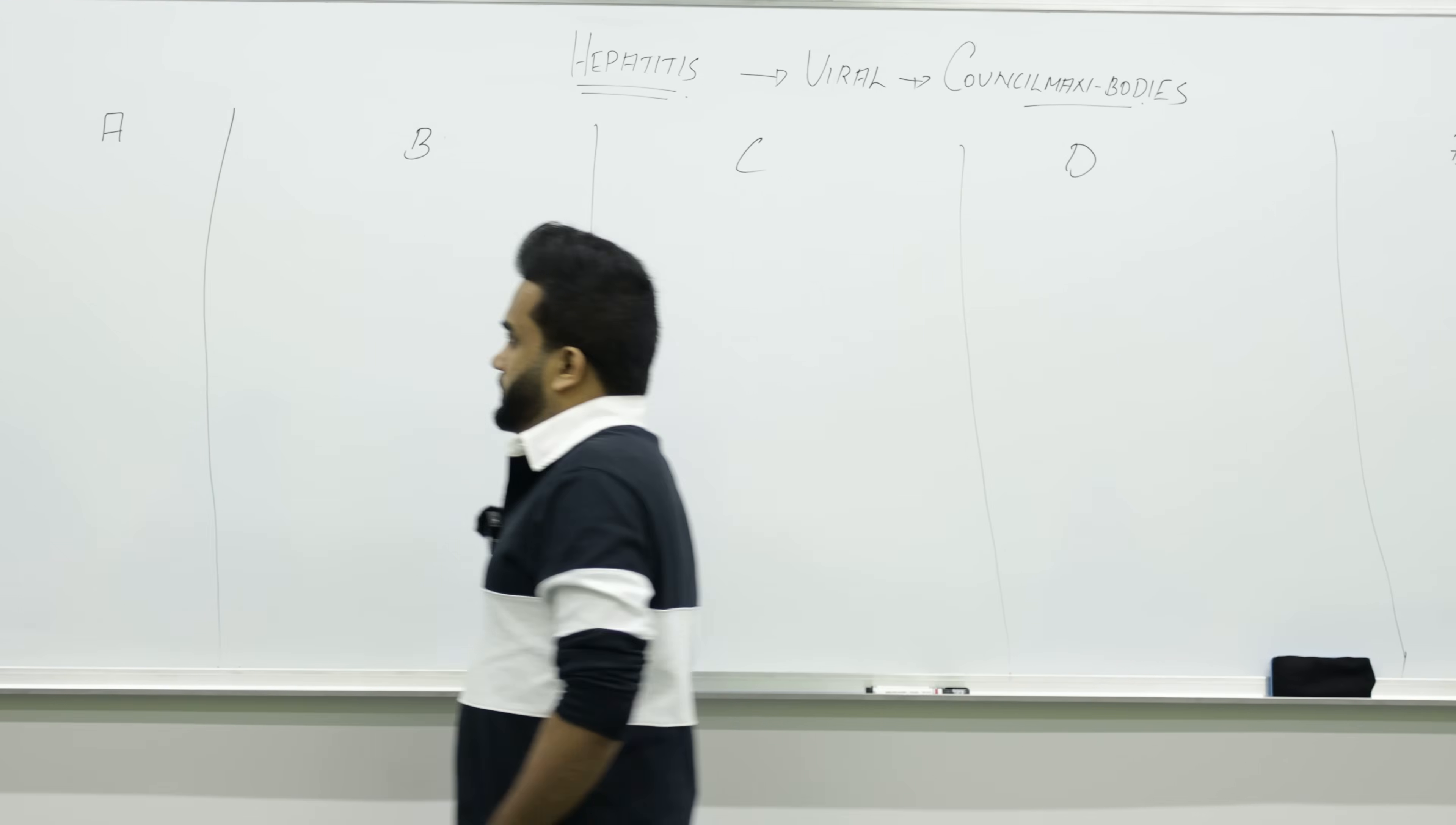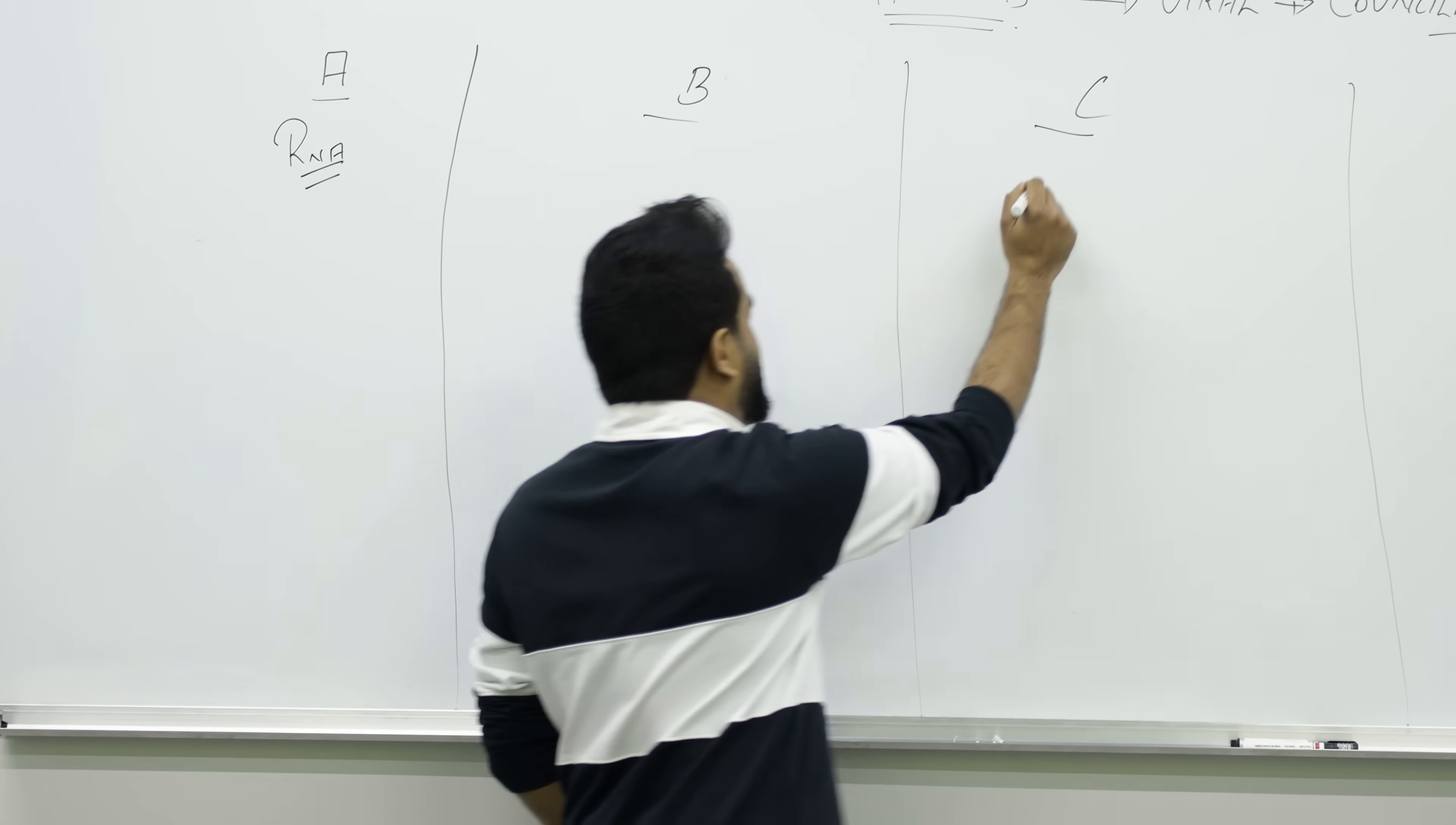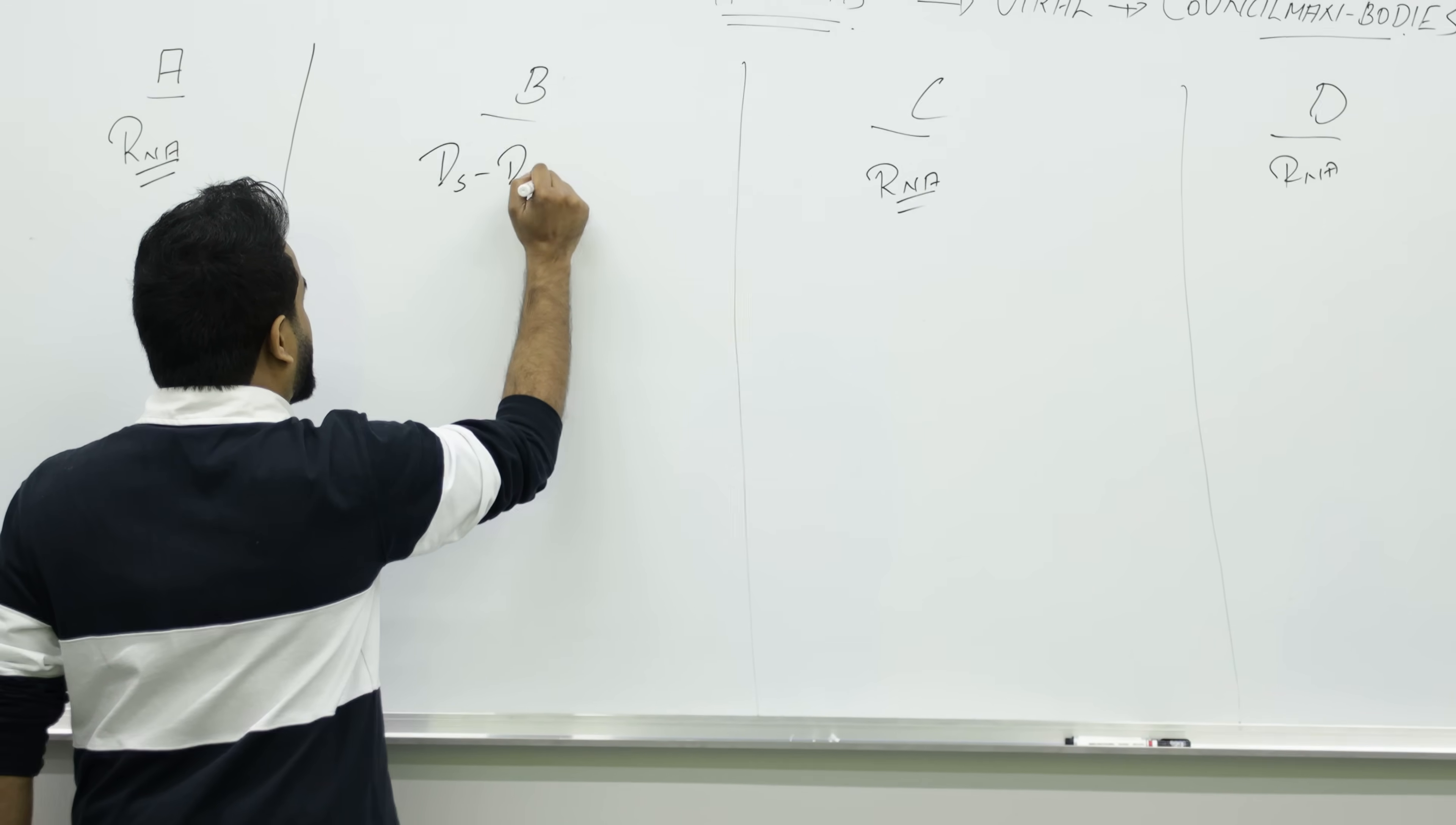First, what is the genetic material each of these have? Everyone is made up of RNA virus. A is RNA, C is RNA, D is RNA, E is also RNA. Who is the exception? Hepatitis B. They're made up of double-stranded DNA.